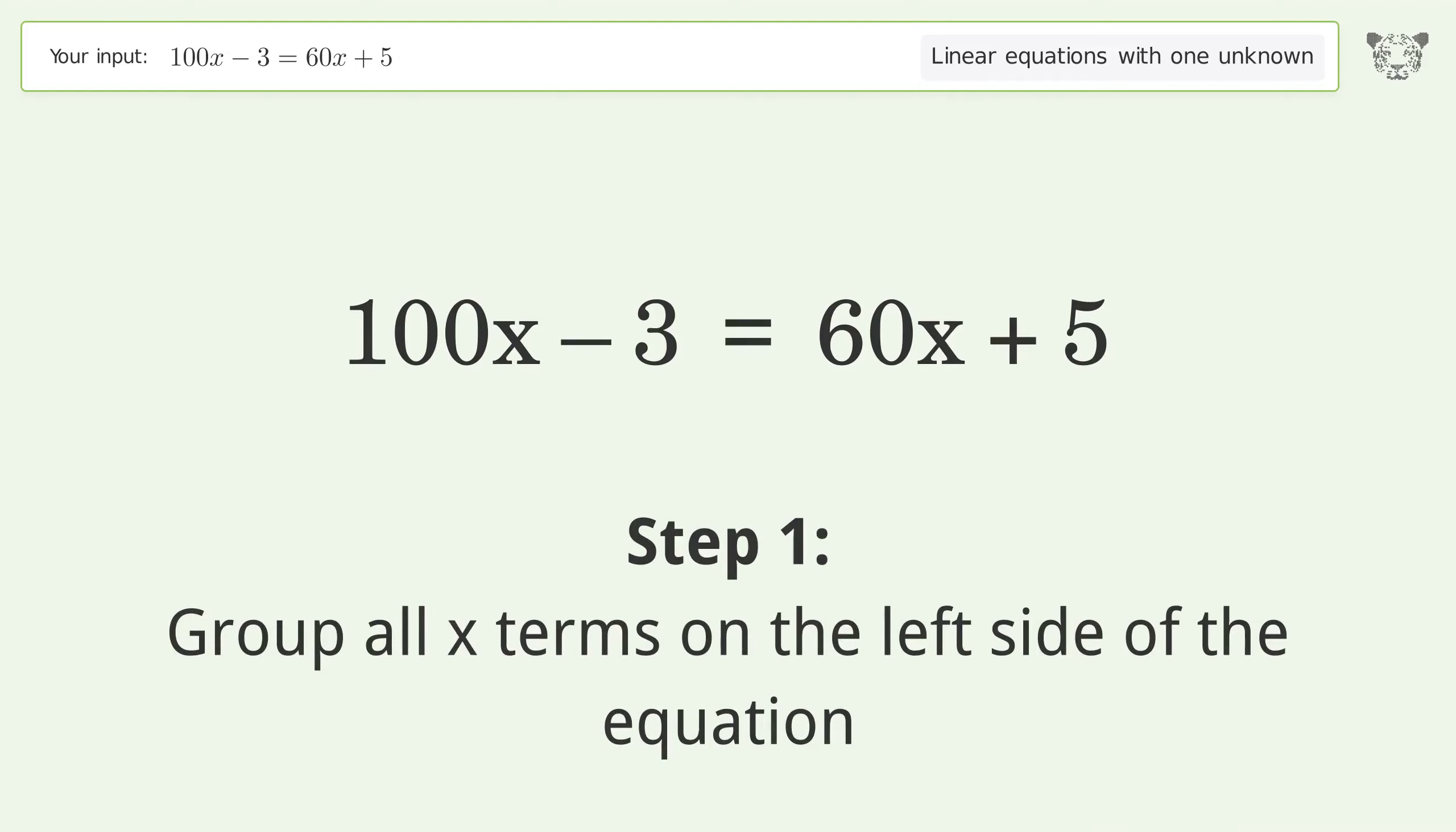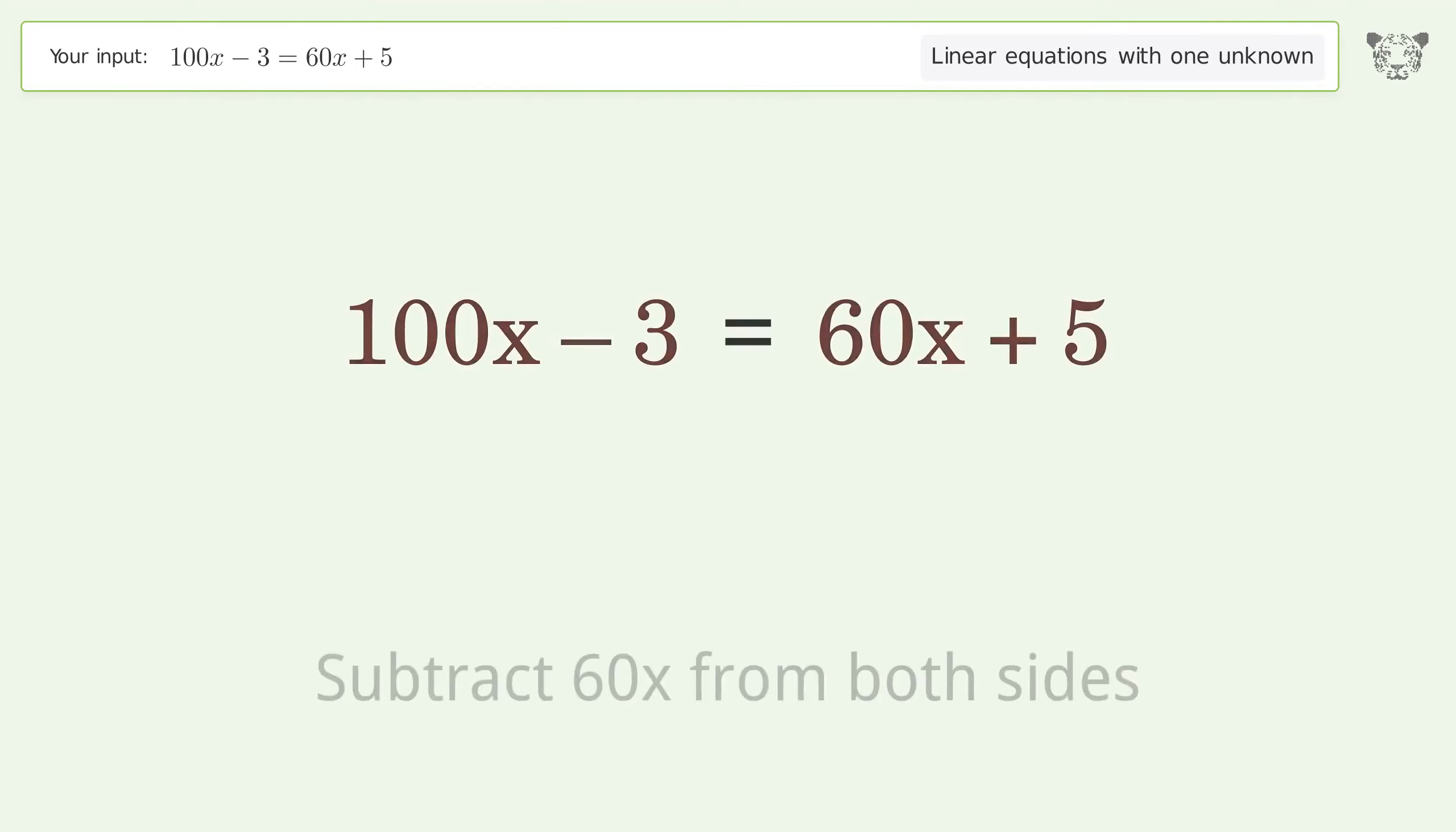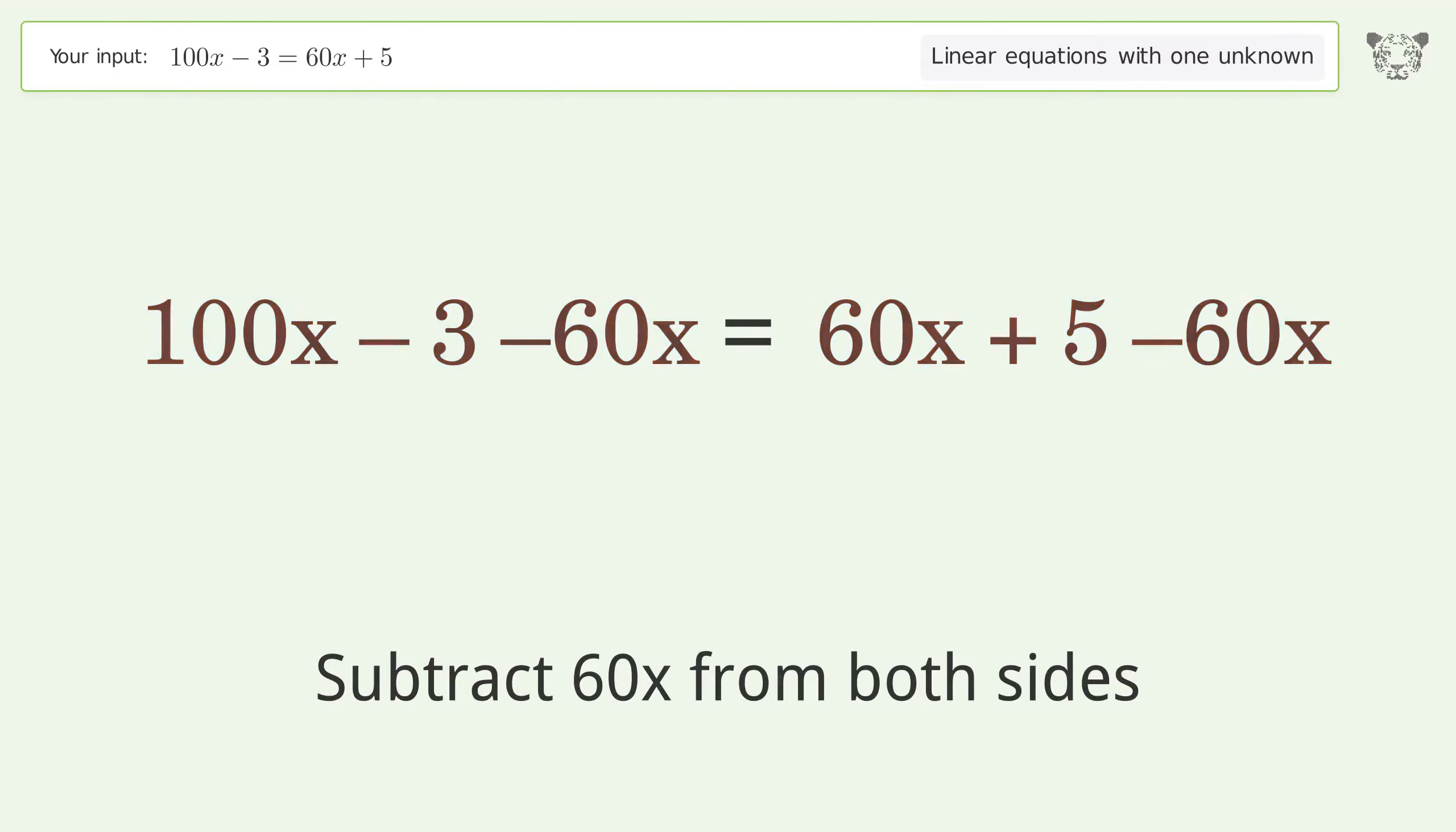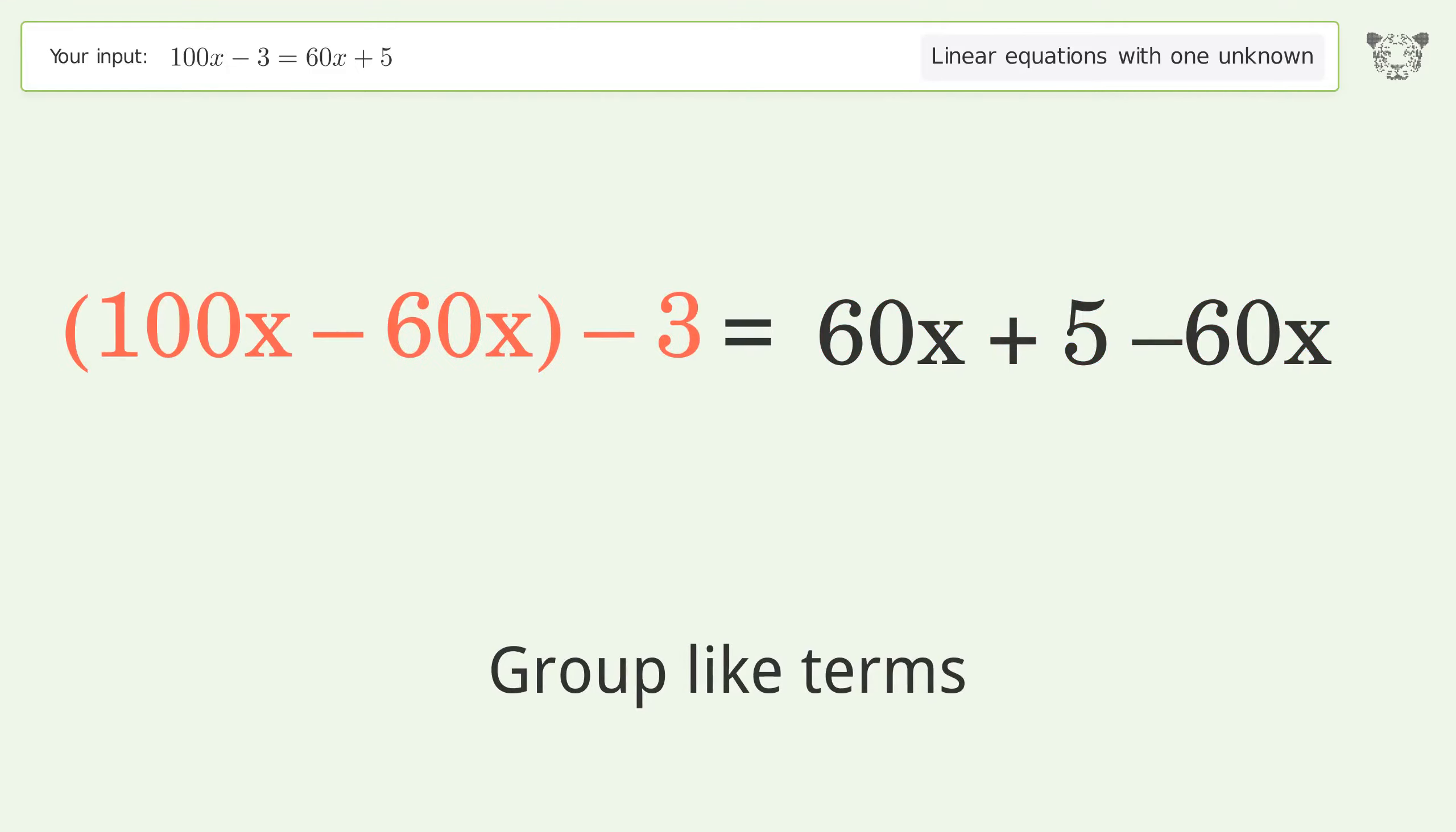Group all x terms on the left side of the equation. Subtract 60x from both sides. Group like terms. Simplify the arithmetic.